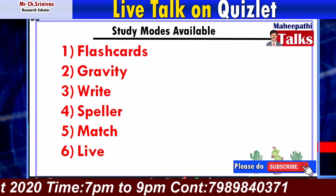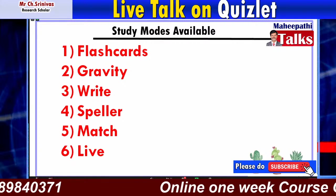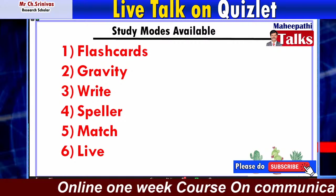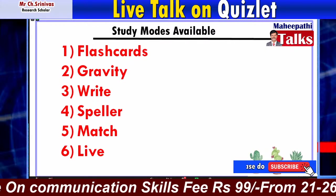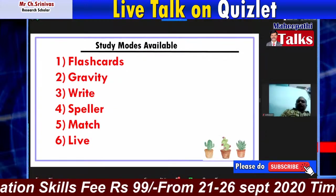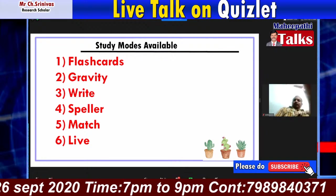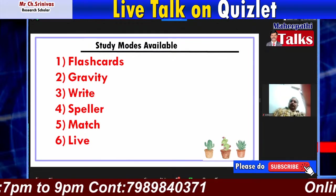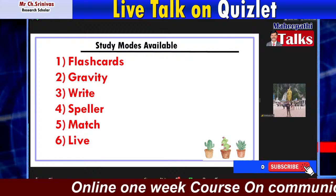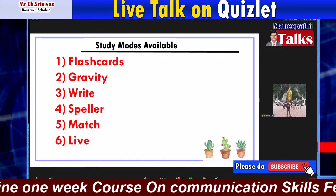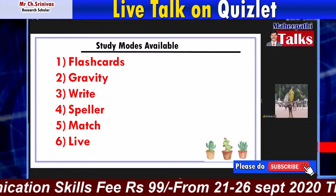The third mode is a writing activity — a definition of a word is given and students need to supply the word, or words are given and students write the definition. The fourth is speller. The fifth is a matching game where words and their definitions are given, and students match words with their appropriate meanings. Students can also play live games with the teacher — when teaching on Zoom or any online web conferencing tool, students can instantly play games via a link the teacher sends.